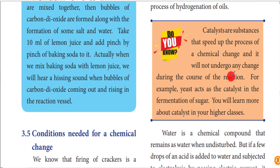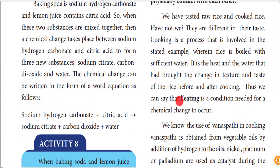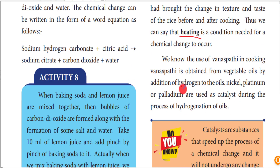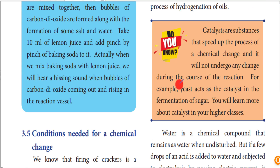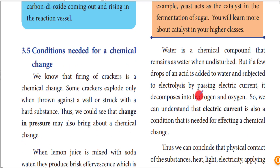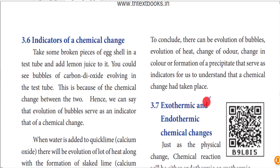Factors that cause chemical changes include pressure, heat, light, and electric current. For cooking food, we need heat - for example, boiling rice requires heat to convert it. Similarly, cooking with oil uses a catalyst. A catalyst is a substance or ingredient that speeds up or slows down the process of a chemical change without being consumed. Some reactions also happen with the help of electric current from a battery.